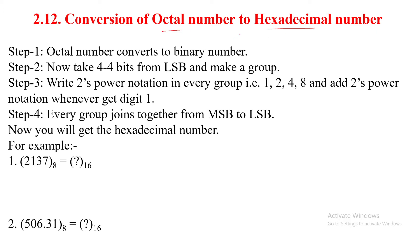You cannot convert an octal number to hexadecimal number system directly. So we have two methods. First method: octal to binary and then binary to hexadecimal. Second method: octal to decimal and then decimal to hexadecimal number system. You can use whichever method you know.